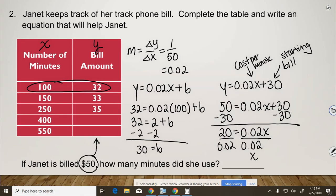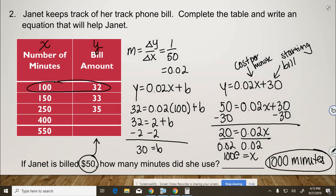So we have x equals 1,000, or finally answer, 1,000 minutes. So if she uses 1,000 minutes, her bill will be $50.